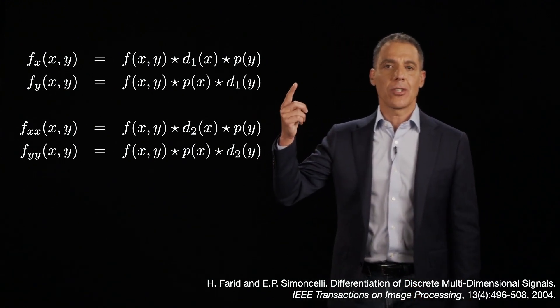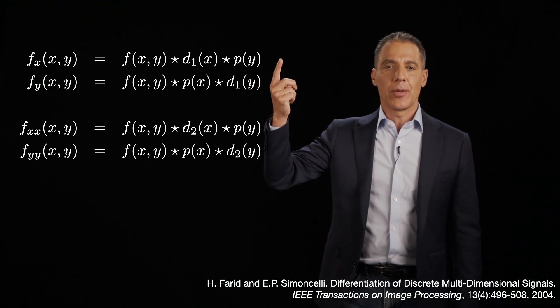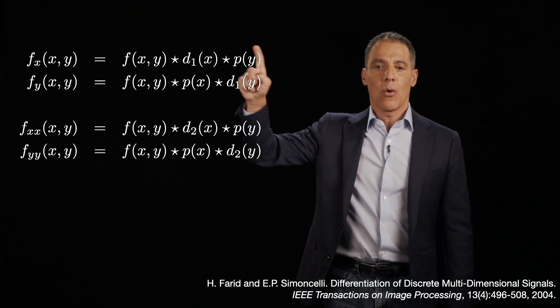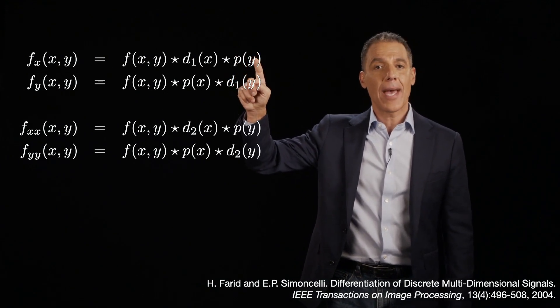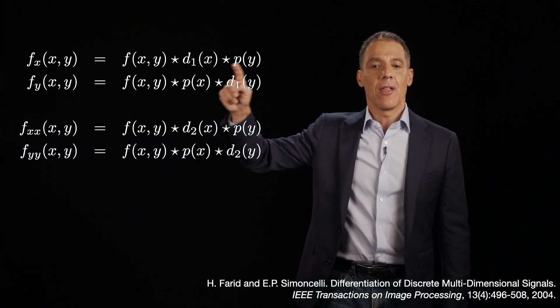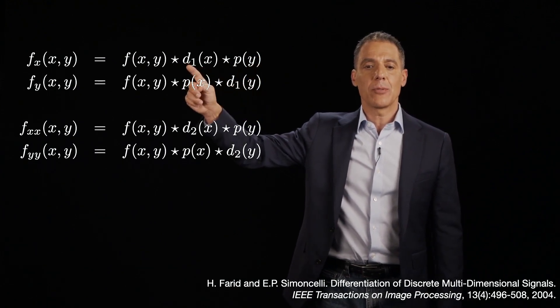So here's what the story looks like. If you want to compute a first derivative, you need two filters. You've already seen an example of that before. One of them is a pre-filter, a low-pass averaging filter, and the other is the derivative filter. This will always be symmetric. This will always be antisymmetric.